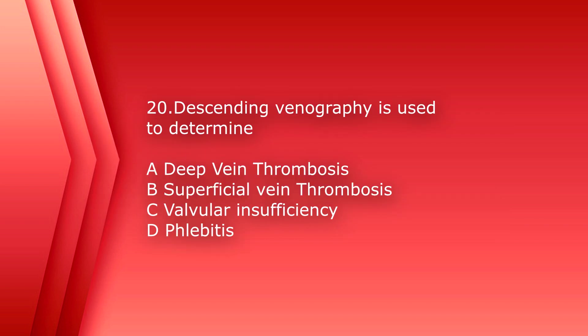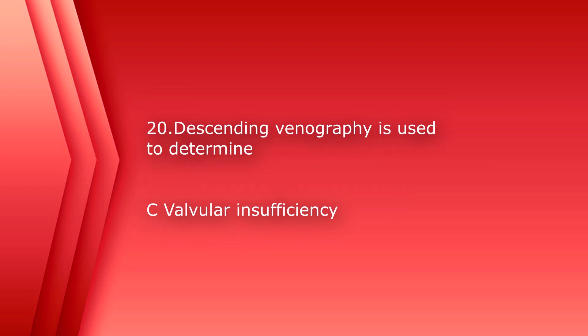Number 20. Descending venography is used to determine A, deep vein thrombosis, B, superficial vein thrombosis, C, valvular insufficiency, or D, phlebitis. The answer is C, valvular insufficiency.